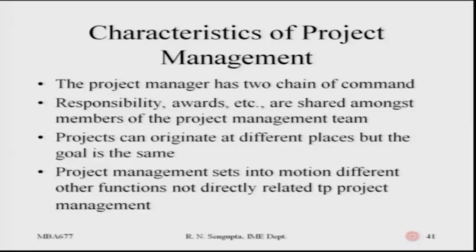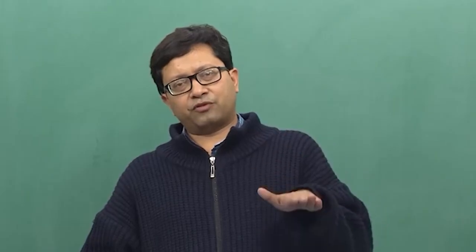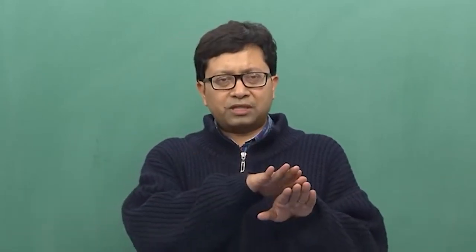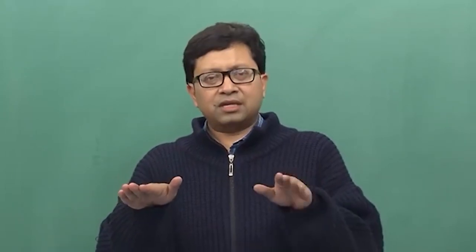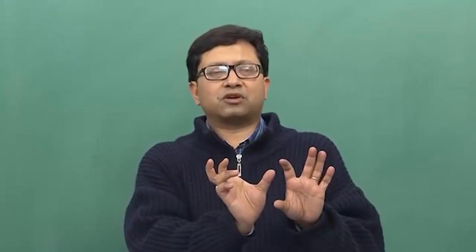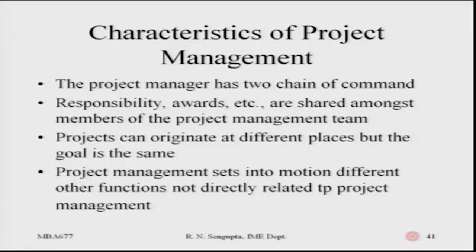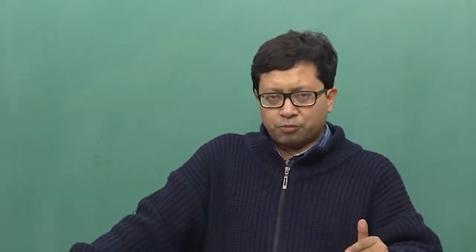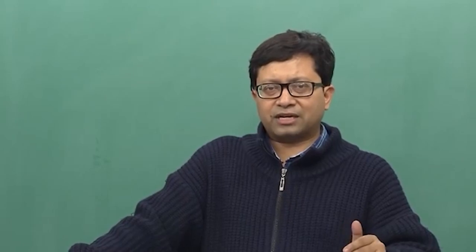Project management has two chains of commands - vertical and horizontal. The vertical means all people involved in the project are under project management; the horizontal means project management works with the business team to understand the business focus so project management is dovetailed into the business concept for maximum benefit. Responsibility and awards are shared amongst members of the project management team, so everybody takes equal proportions of responsibility and tries to get the benefit when the project delivers the desired output.